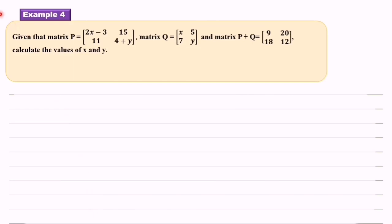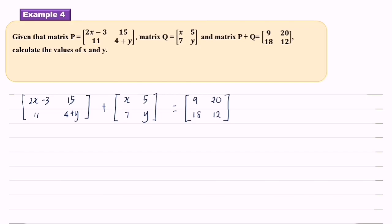After we learn how to add and subtract matrices, now we look at example 4. Given that matrix P, matrix Q, and matrix P plus Q equals [9, 20, 18, 12], calculate the value of S and Y. So we write in equation form, and we need to find the corresponding elements to add.